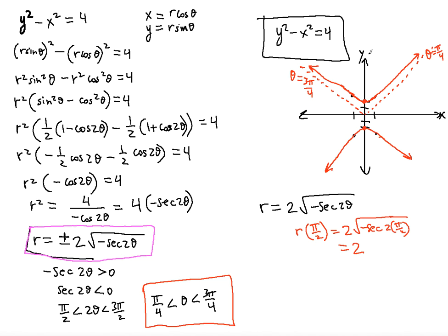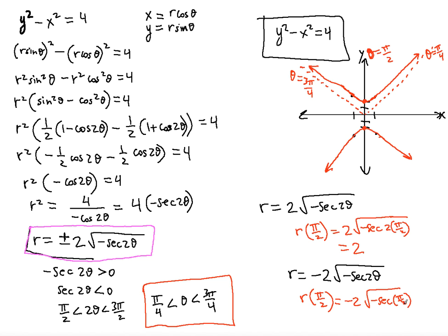This confirms we're describing the upper branch of the hyperbola with the positive radius equation. For the negative radius equation, r equals negative 2 root negative secant 2 theta, testing theta equals pi over 2 again gives negative 2 times 1, so r equals negative 2. That makes sense — the point corresponds to negative 2 on the y-axis.